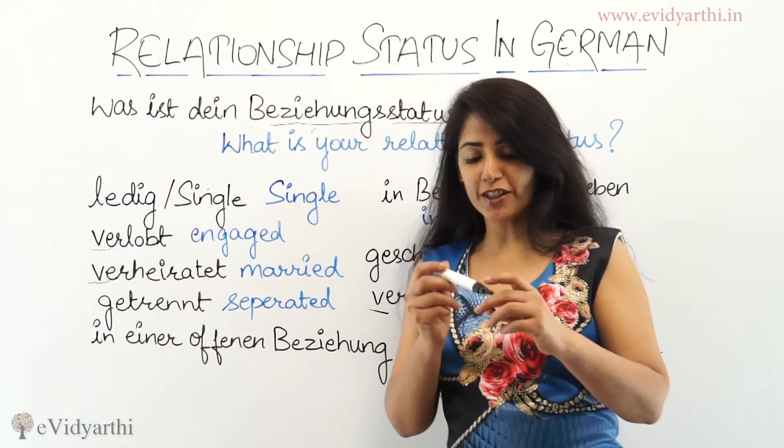If you are single then it's Ledig — or single. Germans also say single, so it's Ledig or single. If you are engaged then it's Verlobt. The 'Be' is pronounced as 'Ver', so it's Verlobt.